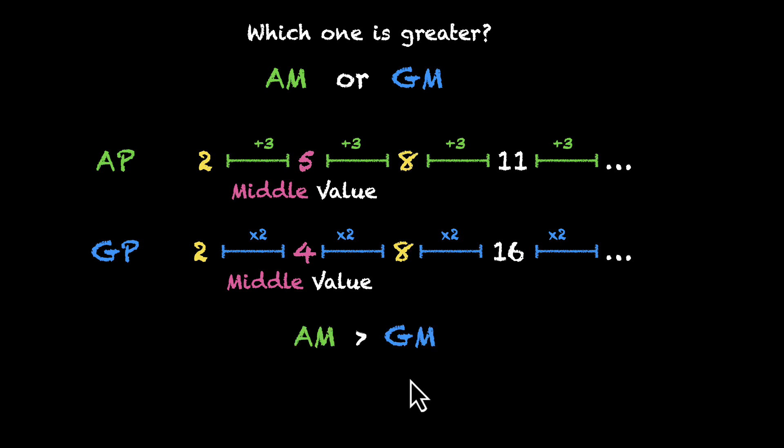Now my question to you is, is this always the case? Are there other scenarios? Are there scenarios where both of them are equal? Is there a scenario where GM is actually greater than AM? Pause the video, figure out some scenarios, and then we'll look at a rigorous proof where we get to the bottom of this.